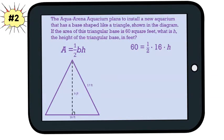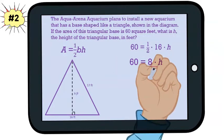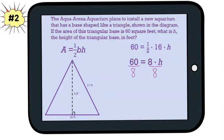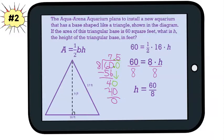Well, one half times 16 is 8, so we have 60 equals 8h. We divide both sides by 8 and get our value for h. When we do the division, we get the value for h, which is seven and a half feet.